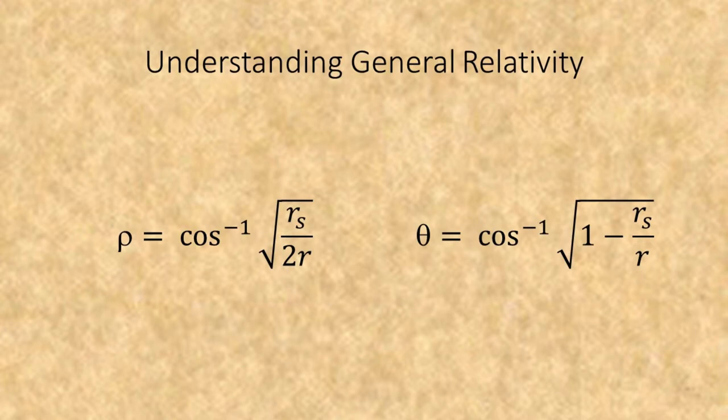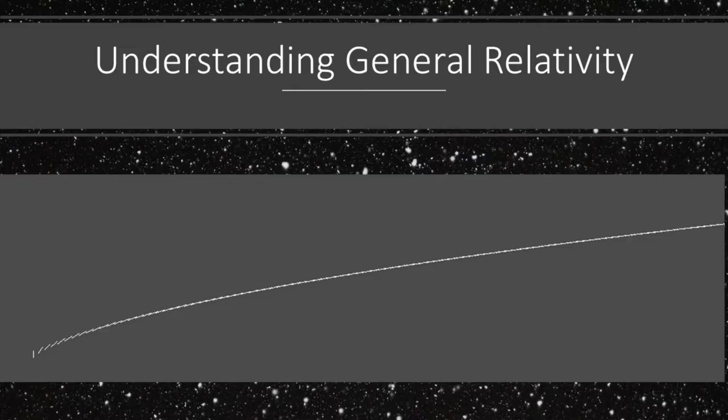These formulas result in these two angular relationships, allowing us to graph the curvature of space-time. This graph shows the curvature of the spatial component while approaching a black hole event horizon. Note that the event horizon is completely vertical.